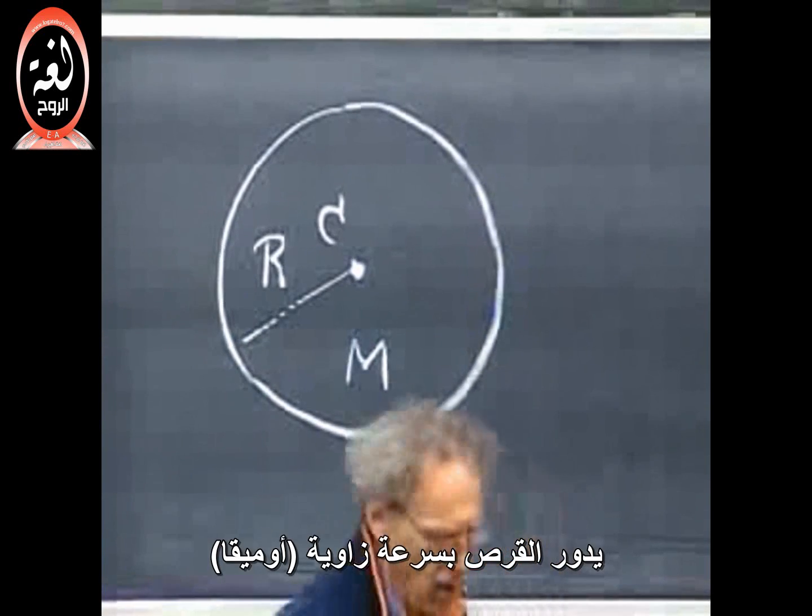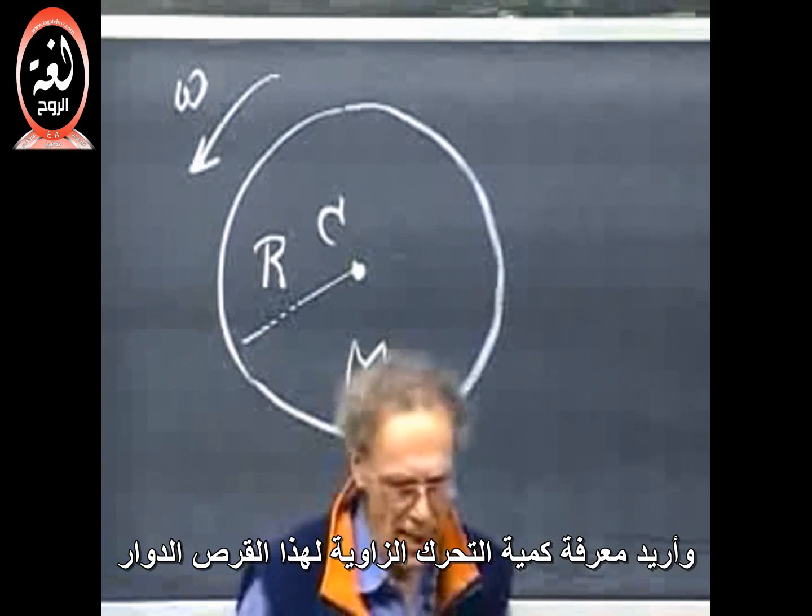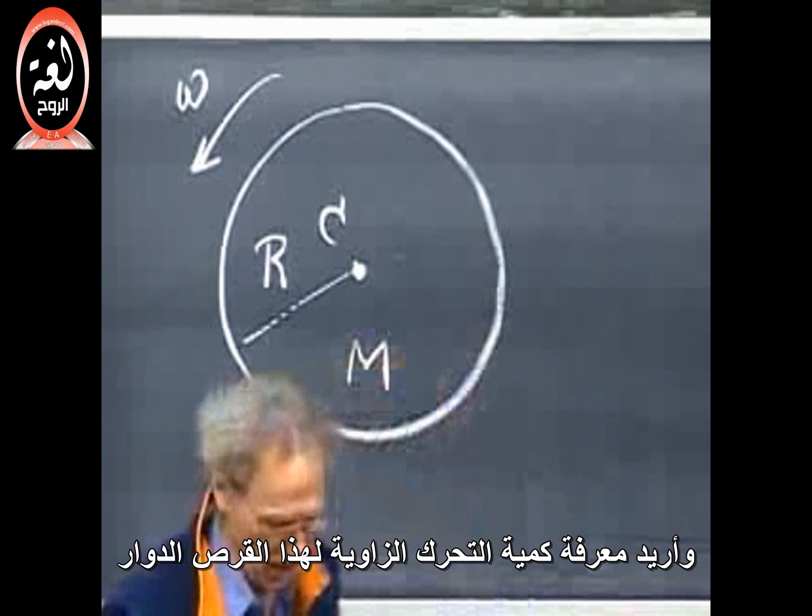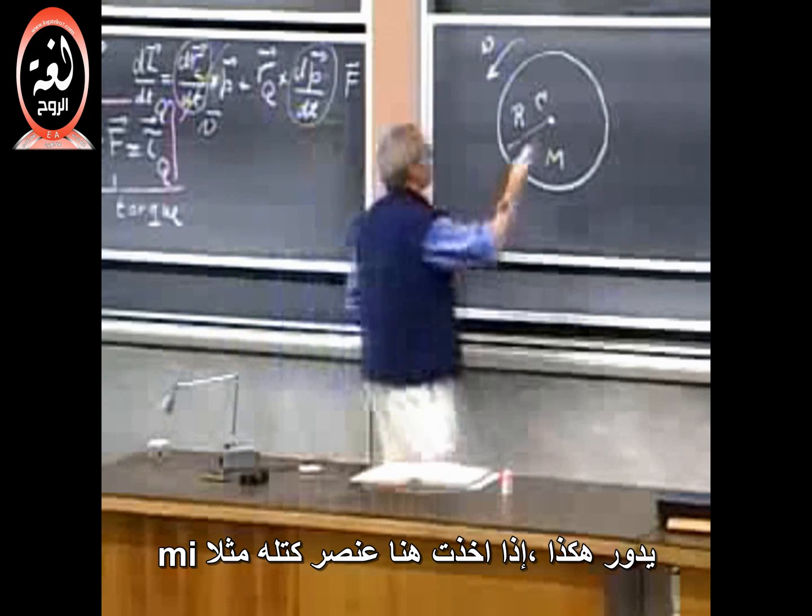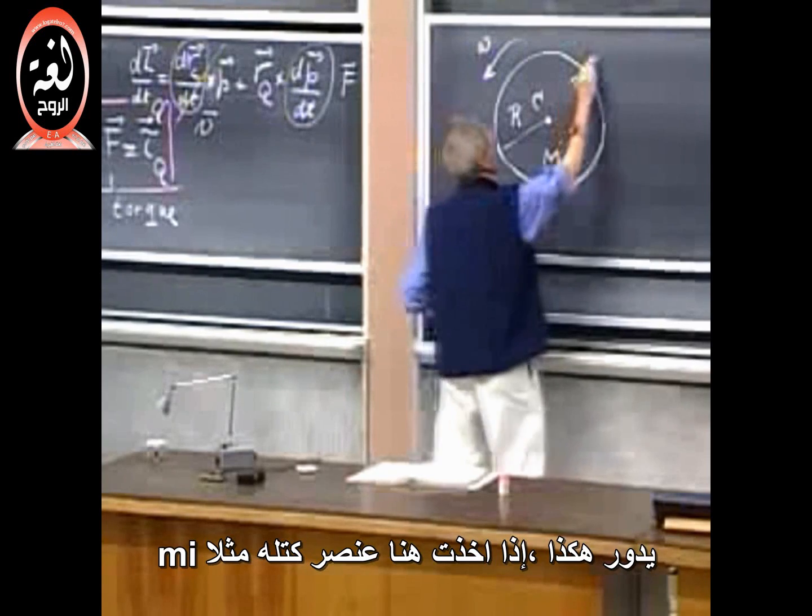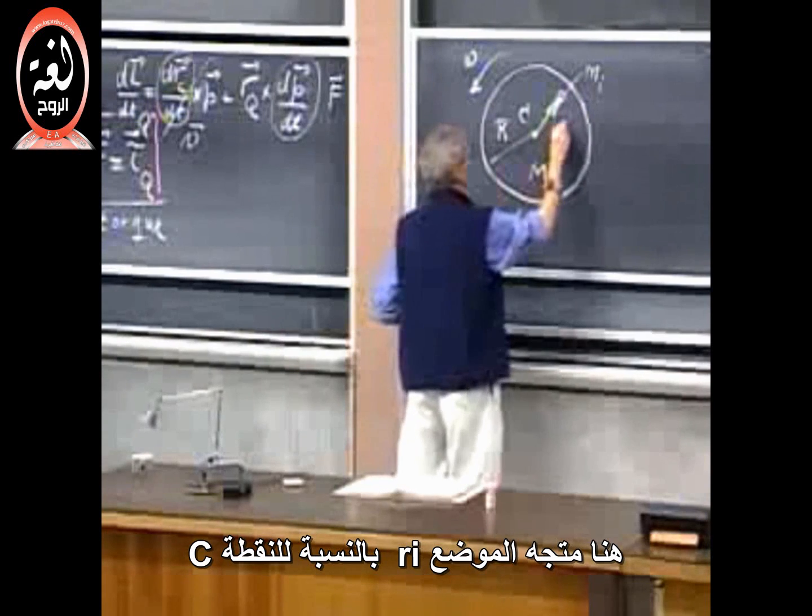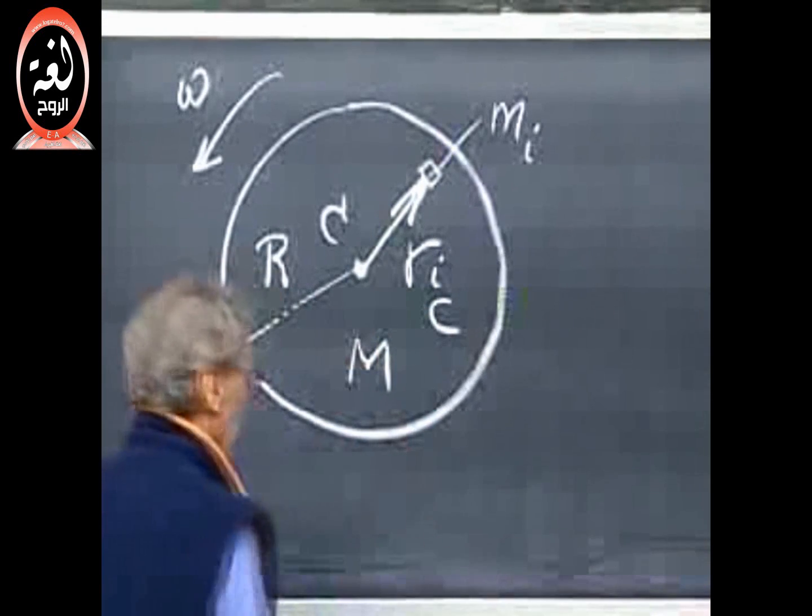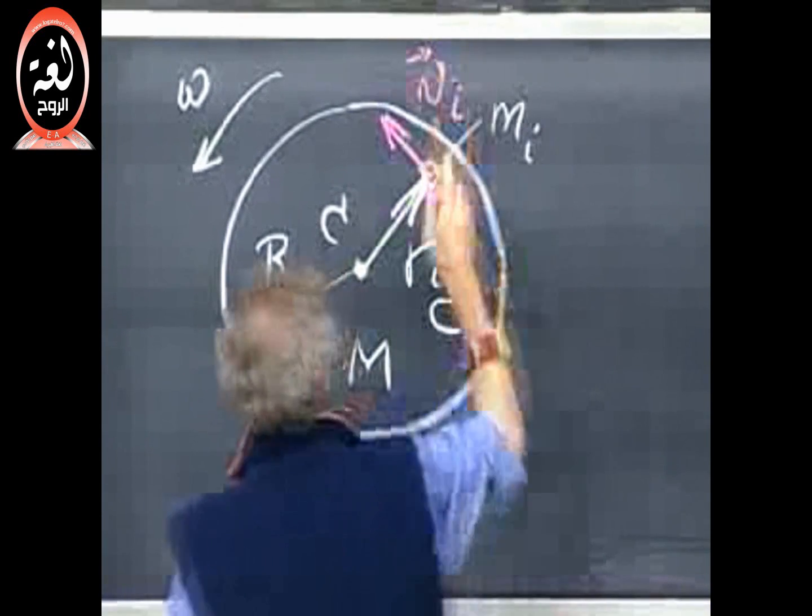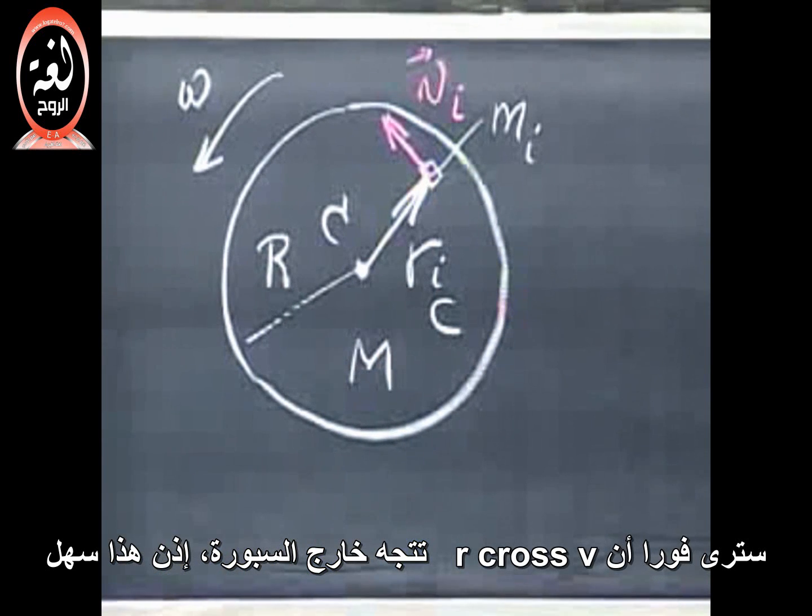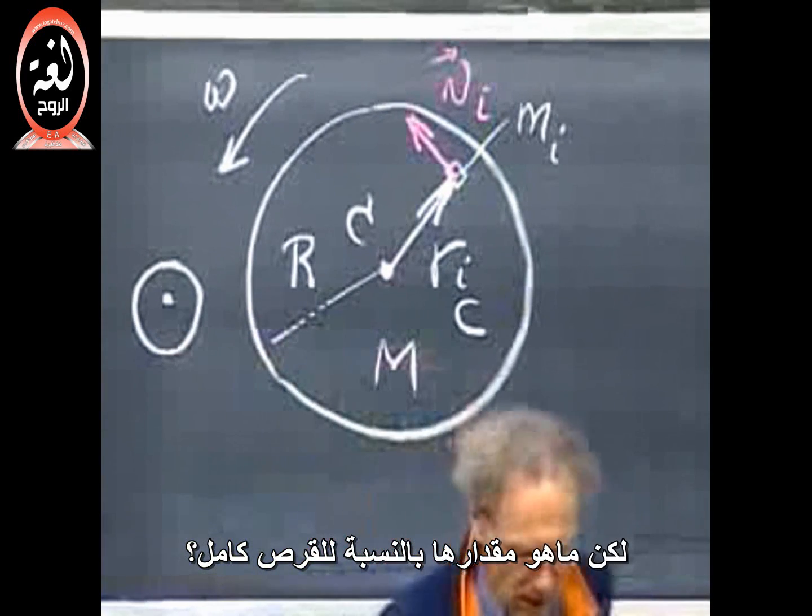It's rotating with angular velocity omega. And I want to know what the angular momentum is of this rotating disk. The direction of the angular momentum is going to be trivial. If it's rotating like this, if you take here a little mass element, mass M of i, this is the position vector R of i relative to that point C, and here you have the velocity V of i. Then you see immediately that R cross V is coming out of the blackboard. So that's easy. Angular momentum will be in this direction. But what is the magnitude of the disk as a whole?